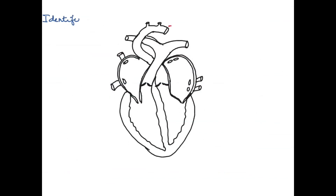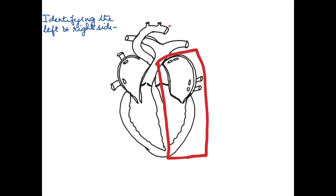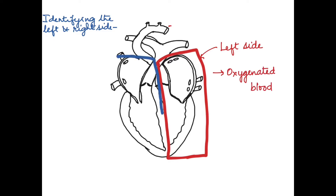First we are going to see how to identify the left and the right side of the heart. Our right is going to be the left side of the heart, and the left side of the heart deals with oxygenated blood — it receives oxygenated blood and pumps it to all parts of the body.